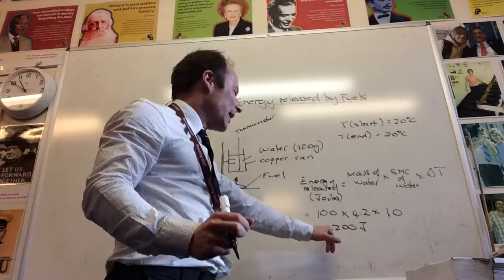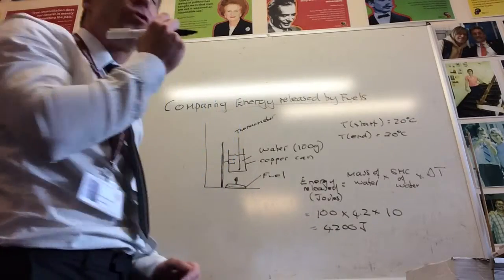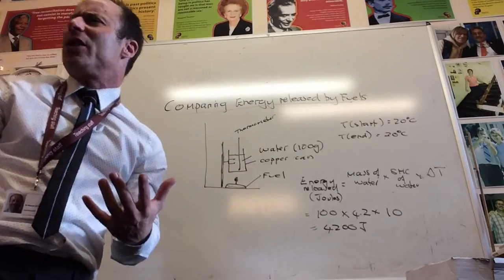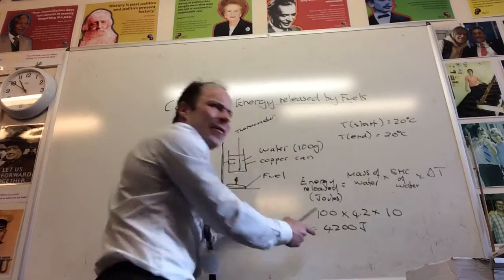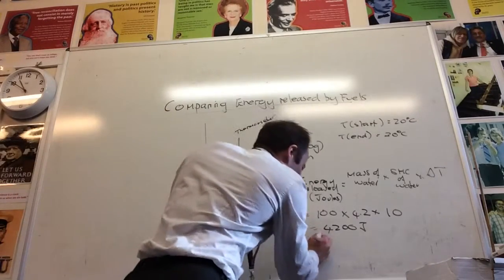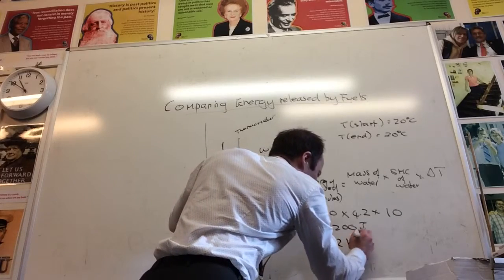If you times all that together, you get 4,200 joules. As we said, we normally use energy in kilojoules, so that is equal to—at that point you divide it by 1,000—so that is equal to 4.2 kilojoules.